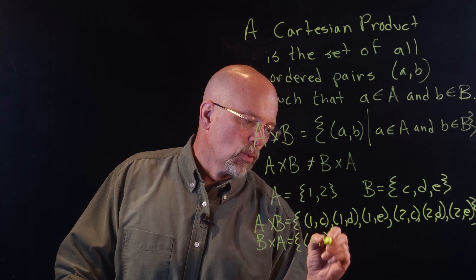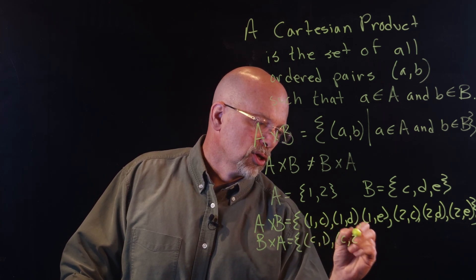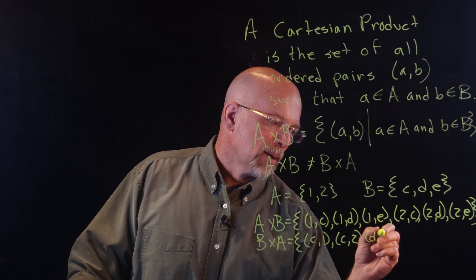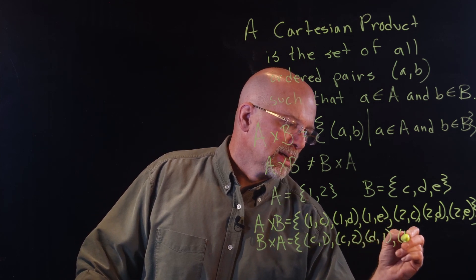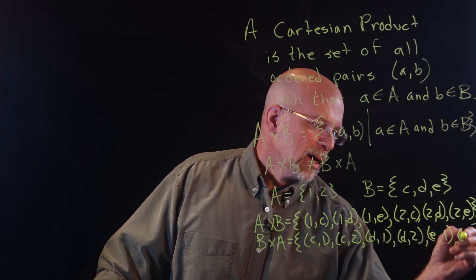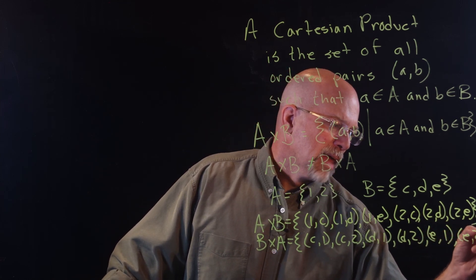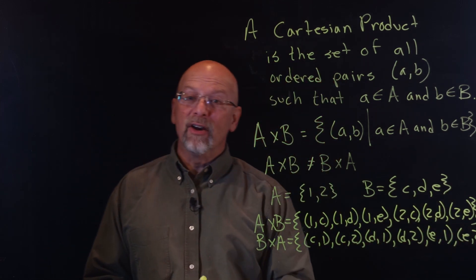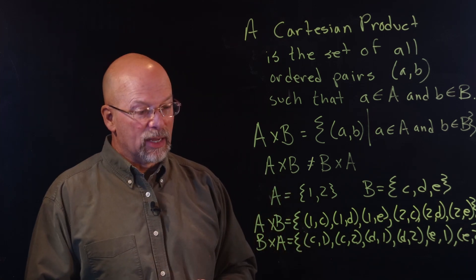If I swapped B and A in the cross product, I would get a very different set of ordered pairs. I would get (C, 1), (C, 2), and then (D, 1), (D, 2), and then (E, 1), and (E, 2). That would be my ordered pair. Very different. So they're not equal to one another.